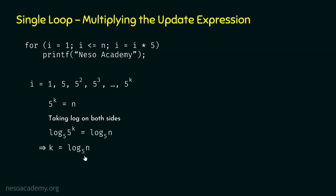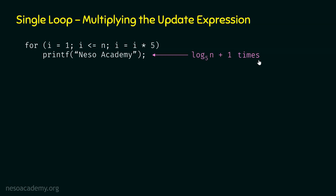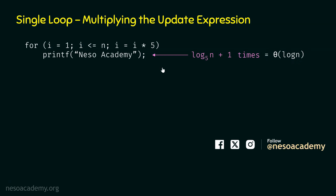We are getting a logarithmic value. k is log(n) base 5, and we know this statement runs k plus 1 times. So replacing k with log(n) base 5, this statement will run log(n) base 5 plus 1 times. The frequency count of this instruction is log(n) base 5 plus 1. Therefore, the time complexity is Theta of log n.